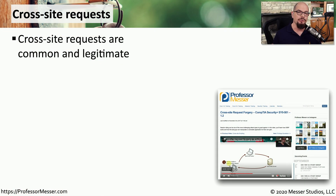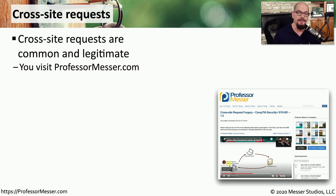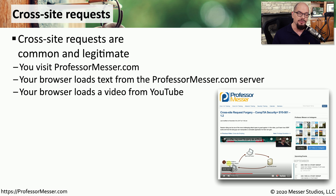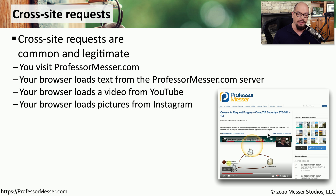In this video, we're going to talk a lot about cross-site requests. This is something that you'll normally see when communicating with a website. For example, you might visit my website at professormesser.com. When you visit the site, there's going to be text loaded directly from my web server. The browser is also going to load videos — that video is not coming from the professormesser.com server, it's coming from YouTube servers. It might also involve loading information from Instagram, so all those images you're seeing are coming from the Instagram servers.